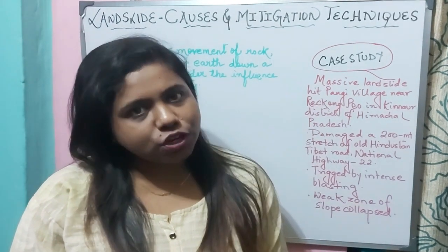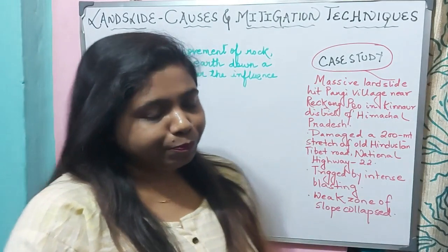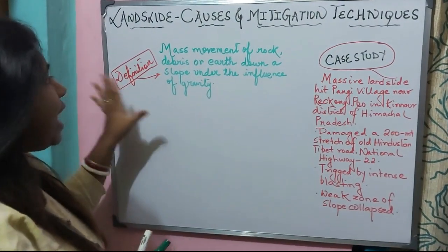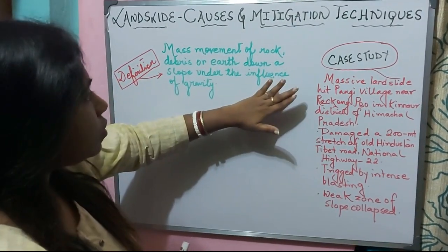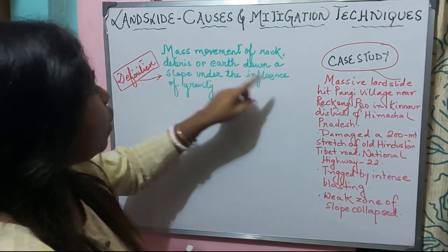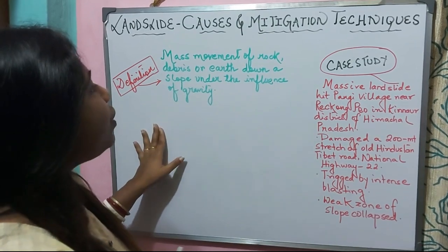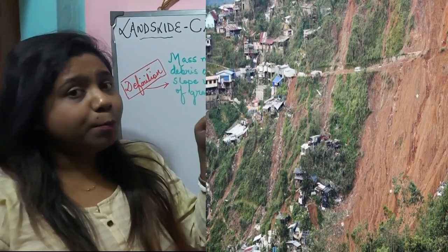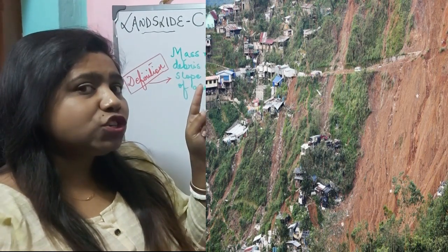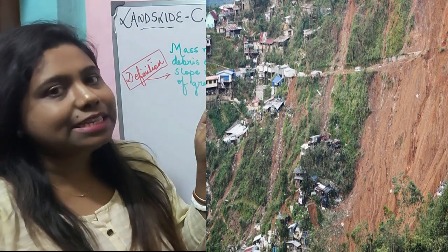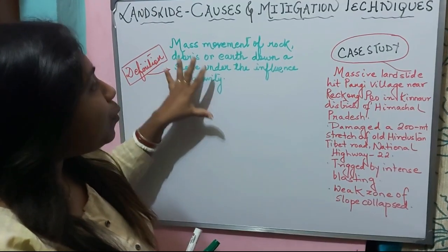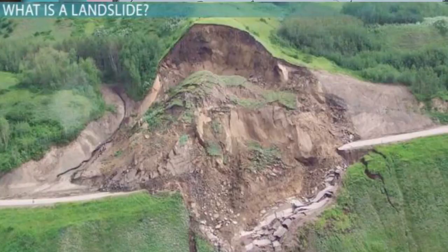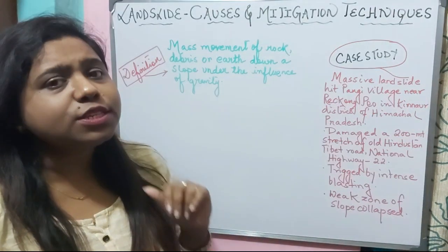Now let us move ahead with landslide. What is landslide? The definition of landslide: landslide means mass movement of rock, debris, or earth down a slope under the influence of gravity. As you can see in the picture beside me, it is showing a landslide — how the mass, that is the debris, rock, or soil, comes down the slope under the action of gravity. That is referred to as a landslide.